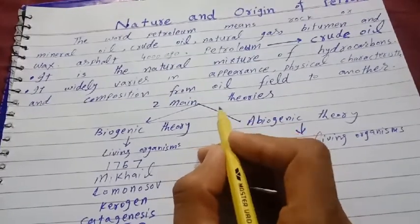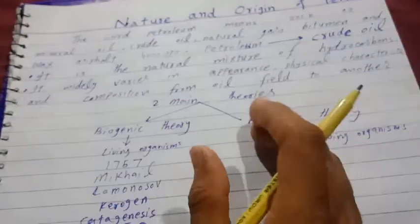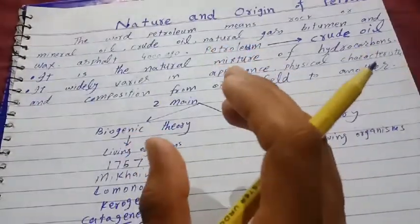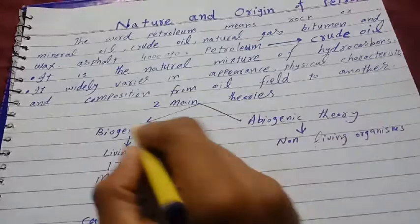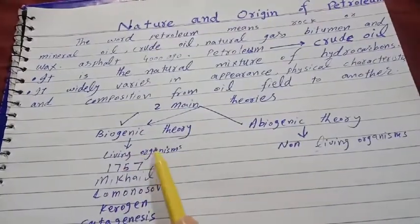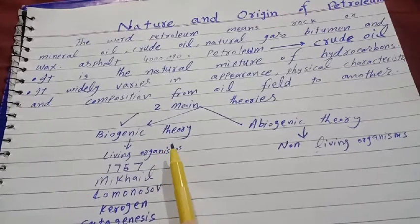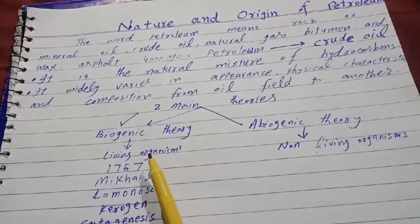Although this happens at different depths in different locations around the world, typically the depth for the oil window might be four to six kilometers. The biogenic theory is the most acceptable theory, as most biological markers present in petroleum support this theory.